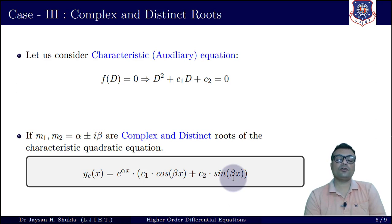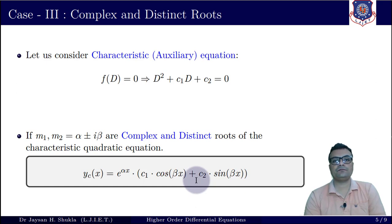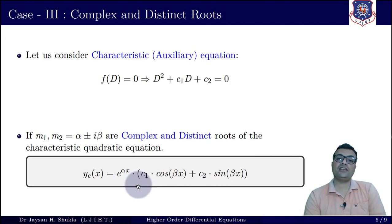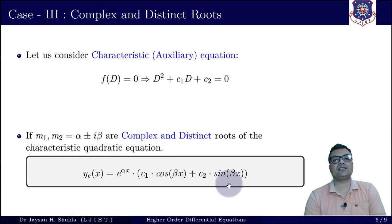Here the equation is of second order and we have two arbitrary constants. The total number of arbitrary constants in any complementary function remains the same regardless of whether the roots are real or complex — it is determined by the order of the differential equation. Real parts are always associated with the exponential function; if there is an imaginary part, cosine and sine terms appear in the complementary function.